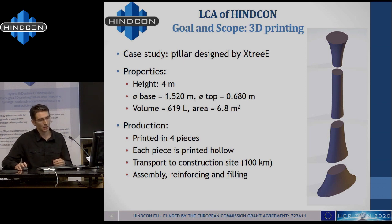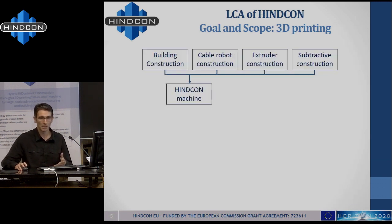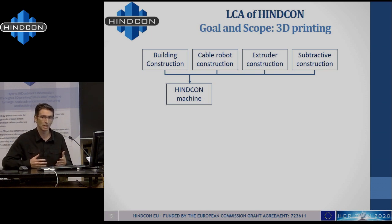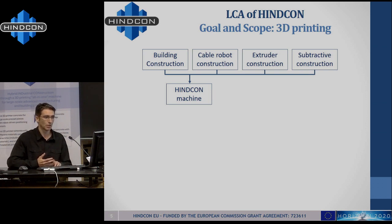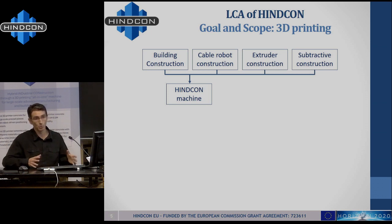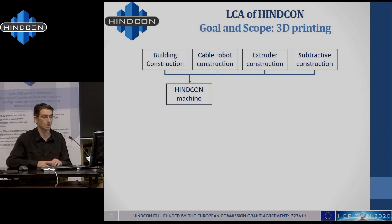What is the life cycle for this pillar? If you want to 3D print a pillar, first of all you need the 3D printer. In the life cycle assessment we are taking into account the manufacturing and production of all the elements and all the machinery needed. In the study we are taking into account the production of the different components of the machine: the cable robot, the extruder, all the subtractive elements, also the building itself — the workshop where the machine is housed and used as a factory.